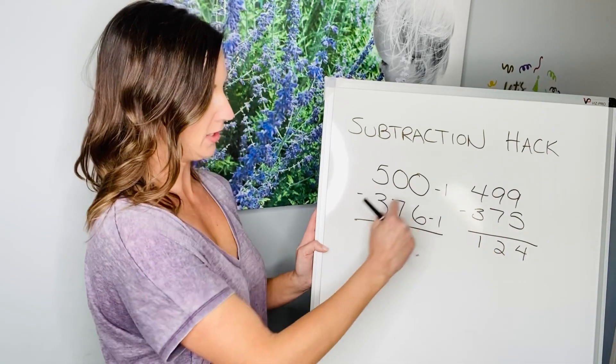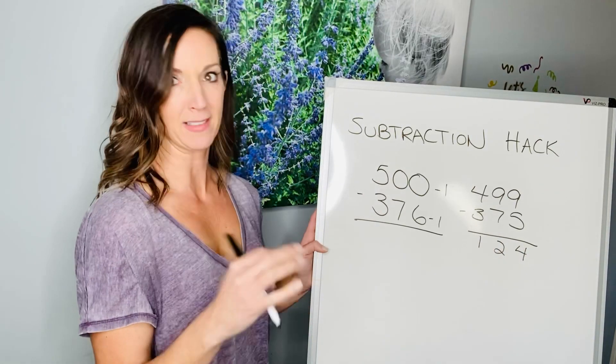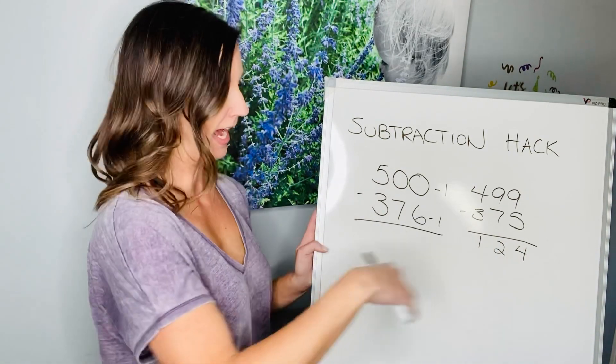So, 500 minus 376 equals 124. And if you think, how the heck did she do that? I will show you.